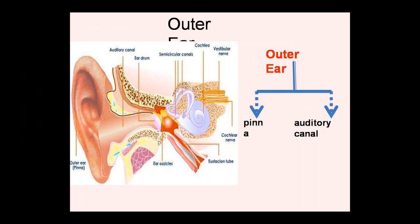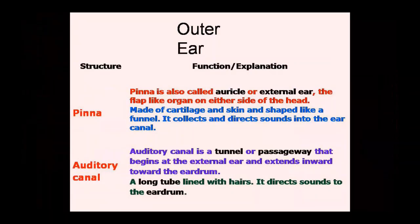The outer ear consists of the pinna and the ear canal. The pinna is also called the auricle and external ear. It is a flap on both sides of the head made of cartilage and skin, shaped like a funnel or cone. It collects and directs sound into the ear canal.